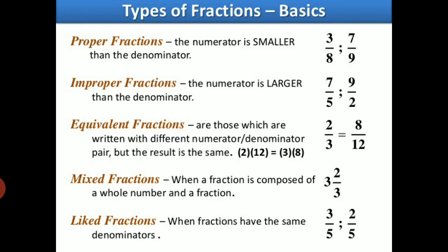Next is types of fractions. First fraction is proper fraction. Here the numerator is smaller than the denominator. Example: 3 by 8, 7 by 9. Next is improper fraction. Fraction in which the numerator is larger than the denominator. Example: 7 by 5 and 9 by 2.